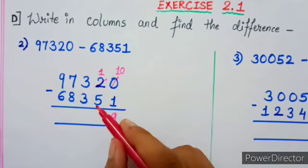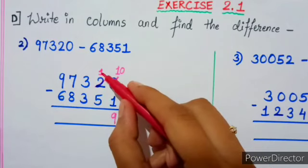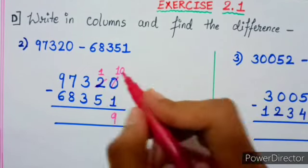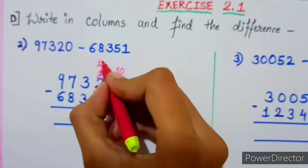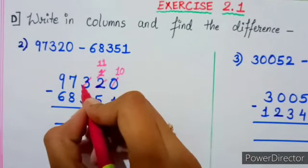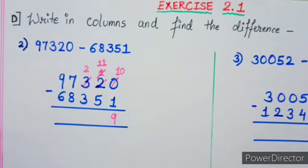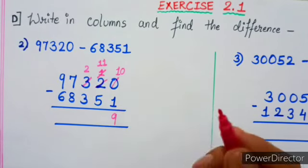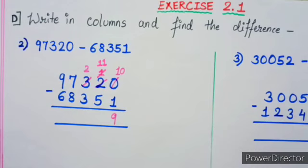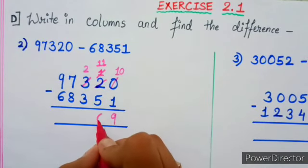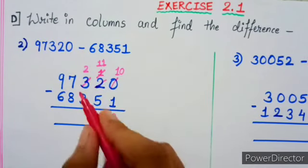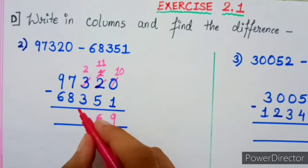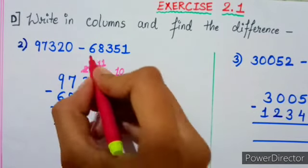Now 10 minus 1 is 9. But here again you can see that this 1 is less than 5, and we cannot subtract 5 from 1. Again we need borrow. So this 1 will be 11 and this 3 will be 2. Now 11 minus 5, you can count ahead of 5, so 11 minus 5 will be 6.